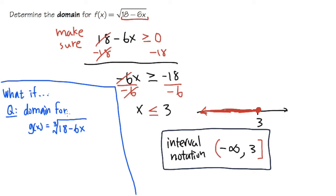What if the question asks us to find the domain for g(x) = ∛(18 - 6x), the cube root? Do we still go through the same process as for the square root? For the square root, we are not allowed to have negative numbers inside — for example, √(-64) does not give a real number, so that is not doable. That's why for square root, we must ensure the inside is greater than or equal to 0.